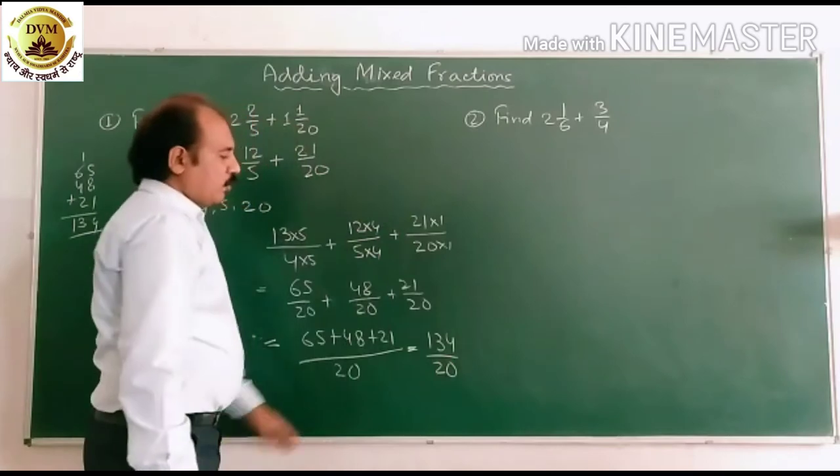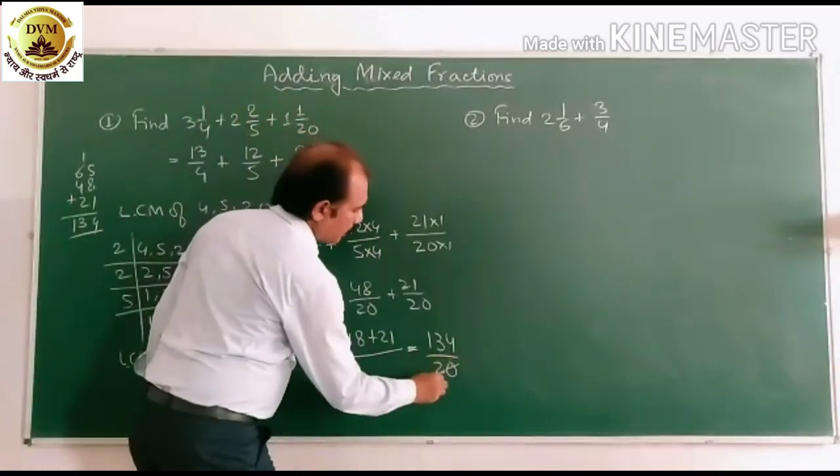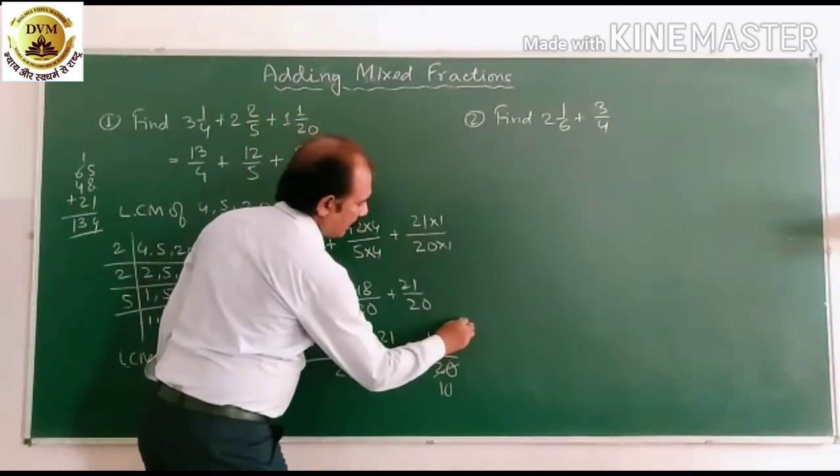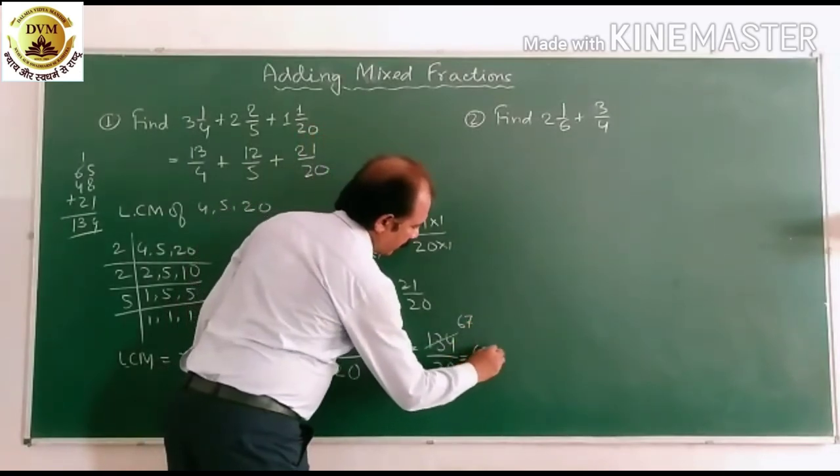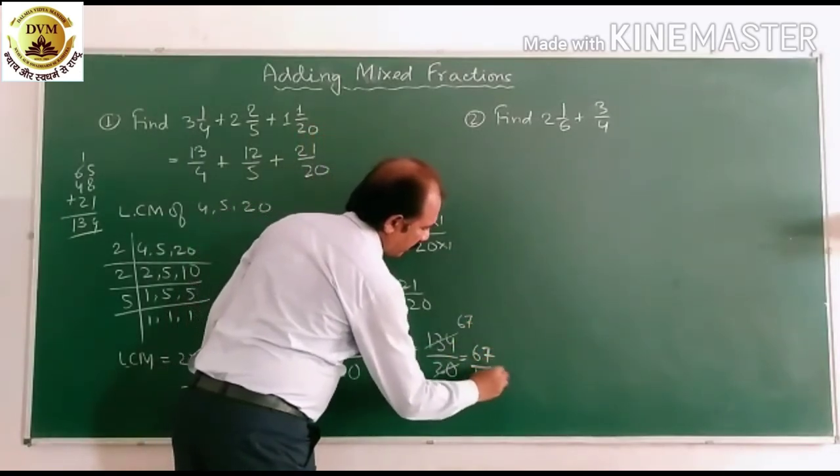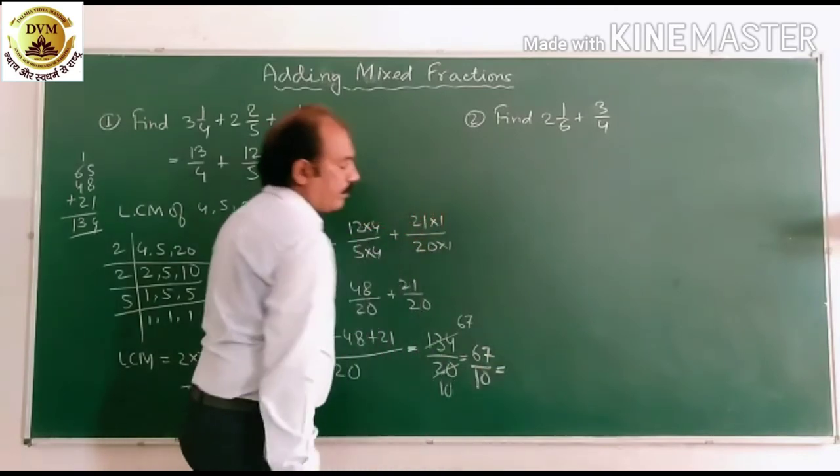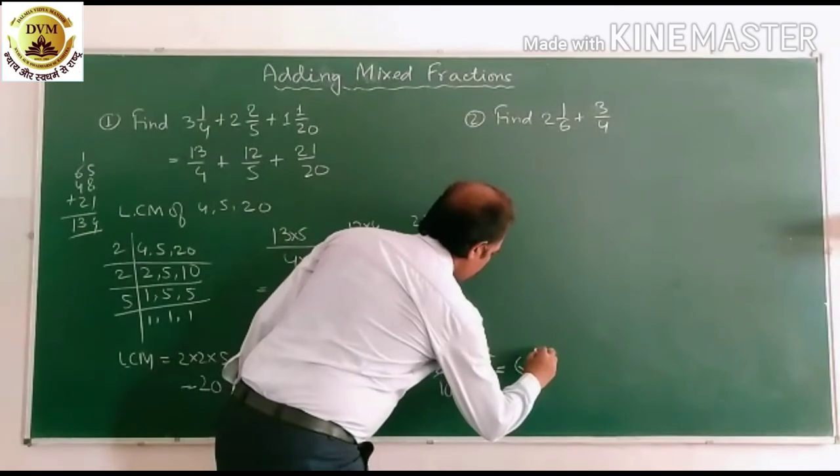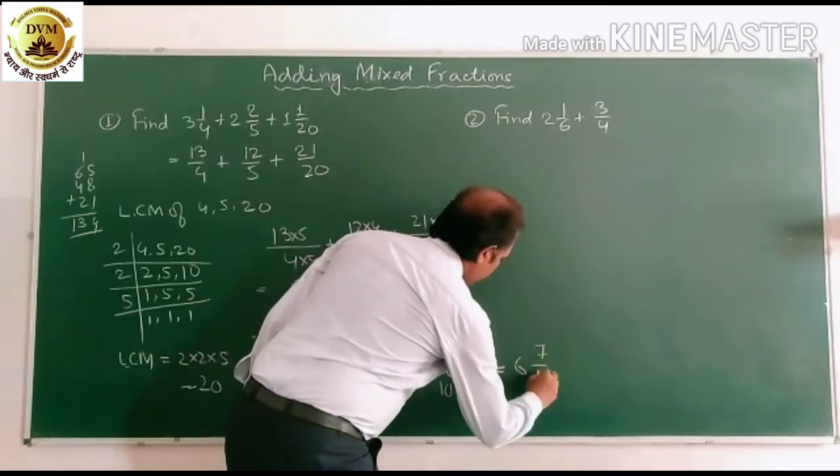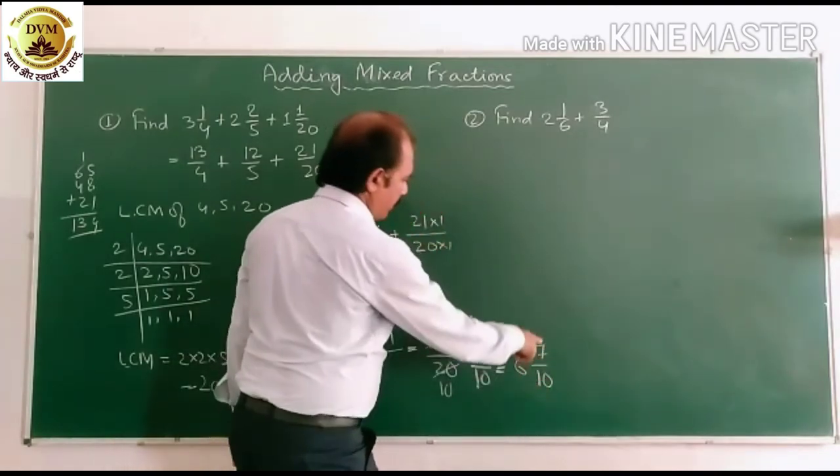We can change into lowest term. 2 tens are 20. 2 sixes are 12. 2 sevens are 14. Equal to 67 by 10. We can change into mixed fraction. 6 7/10. Then we can change into 60 plus 67 like that. Okay.